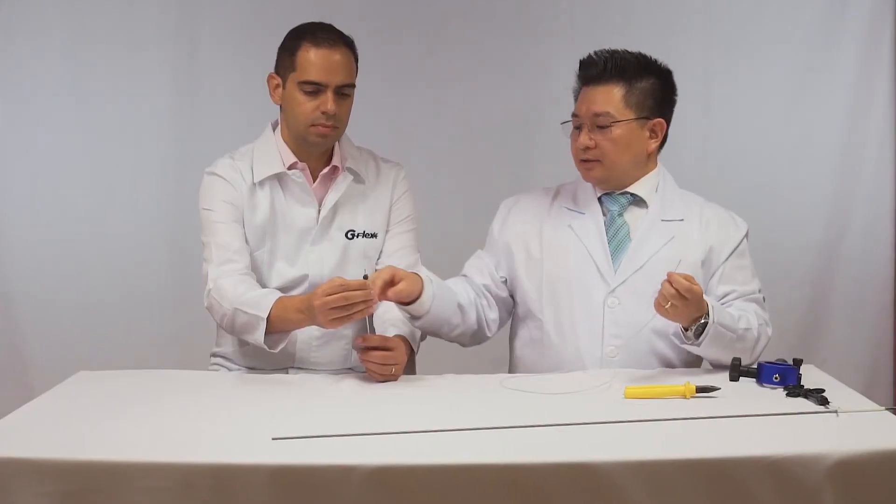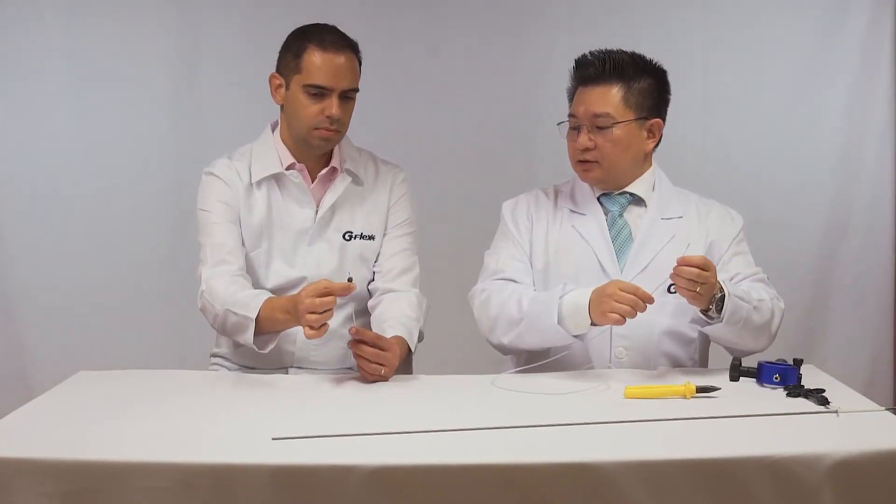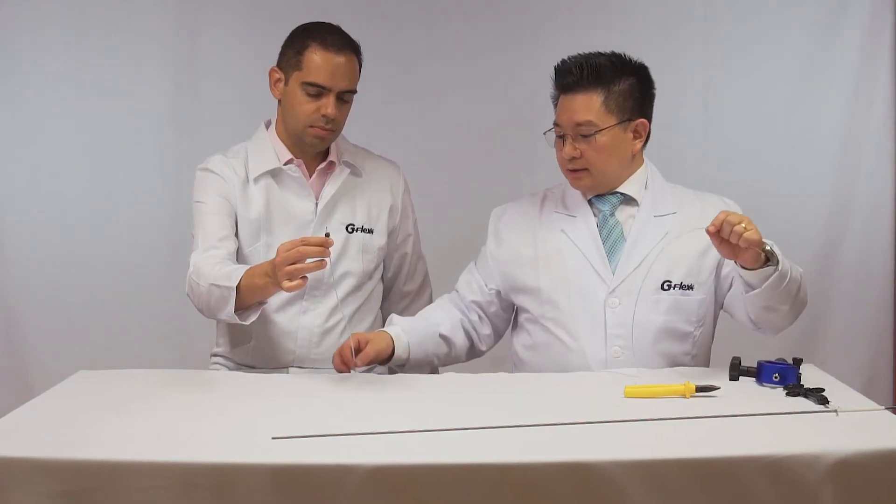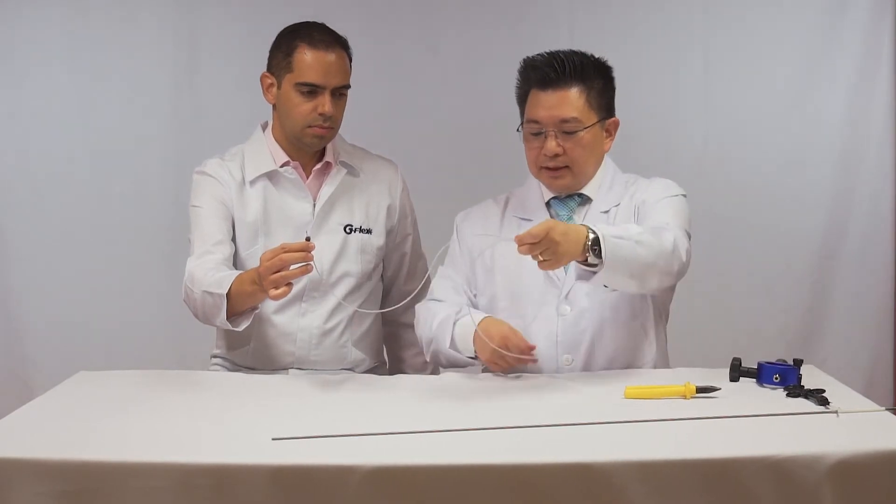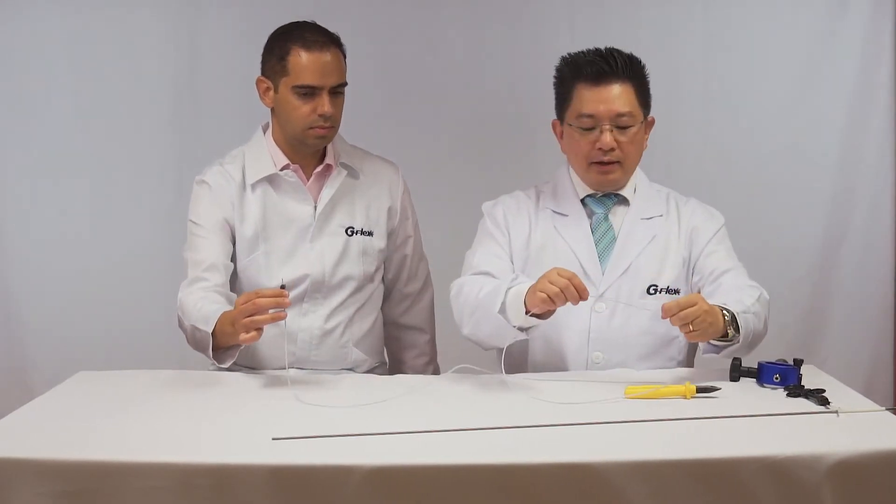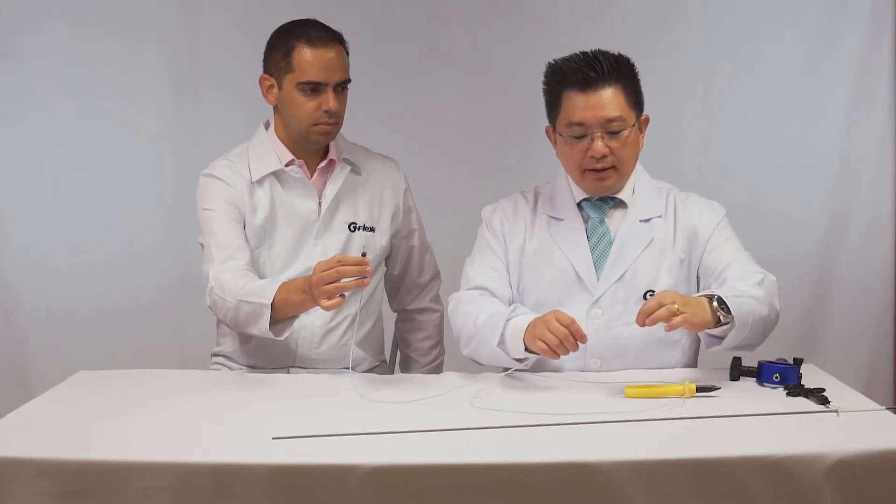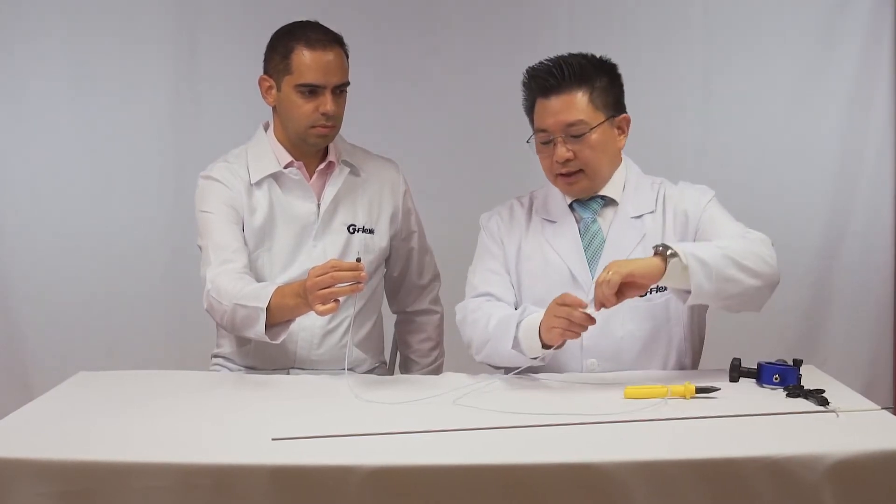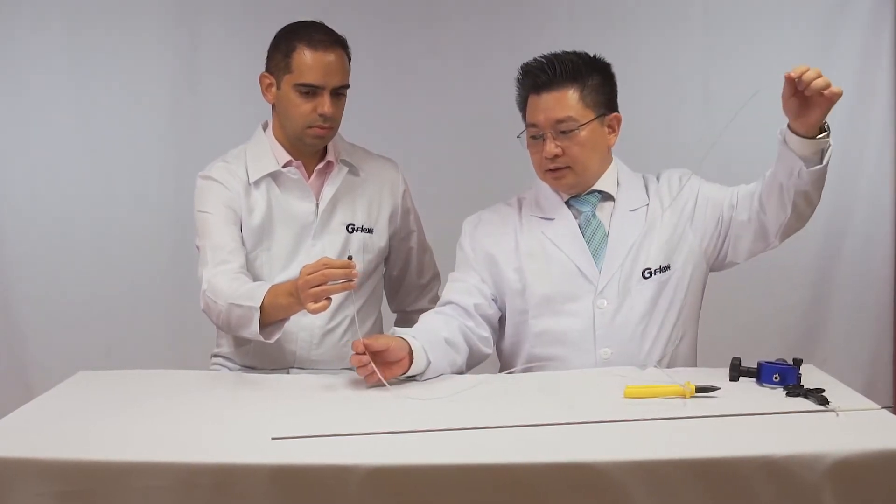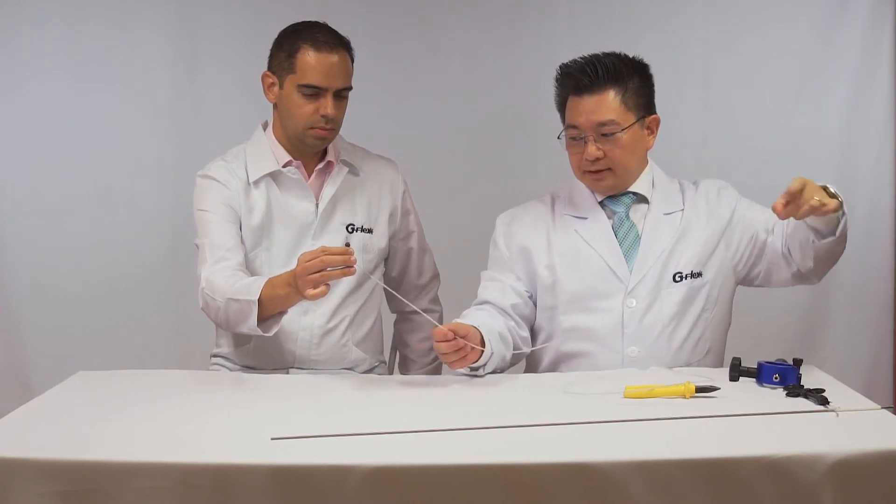Now imagine the stone trapped, we pull out the duodenoscope, it's hanging through the mouth of the patient and we can pull out now the plastic sheath like this.